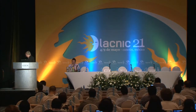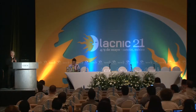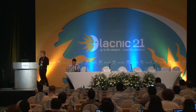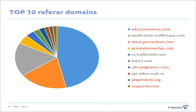Myth number two: surfing adult websites increases the chances of malware infection. Here is data from our systems — the top ten referrer domains for malicious flash redirectors, with adult websites highlighted in red. The biggest chunk is an adult website; the third biggest is also an adult website. More than half of these flash redirectors were found on porn sites. So I think it's safe to say that surfing adult websites does increase your chances of infection.